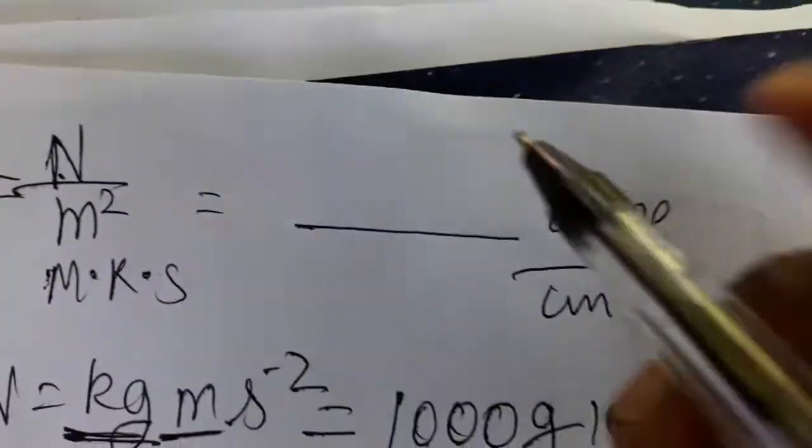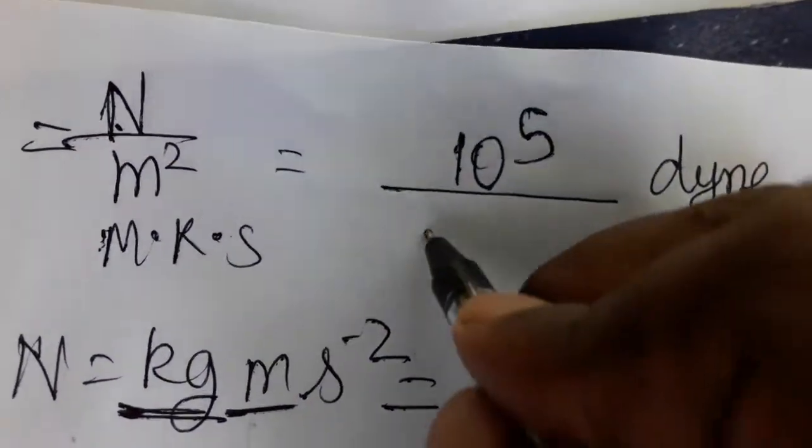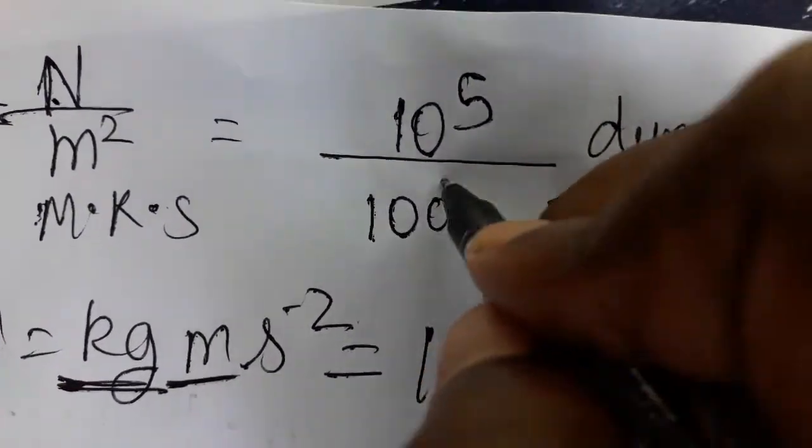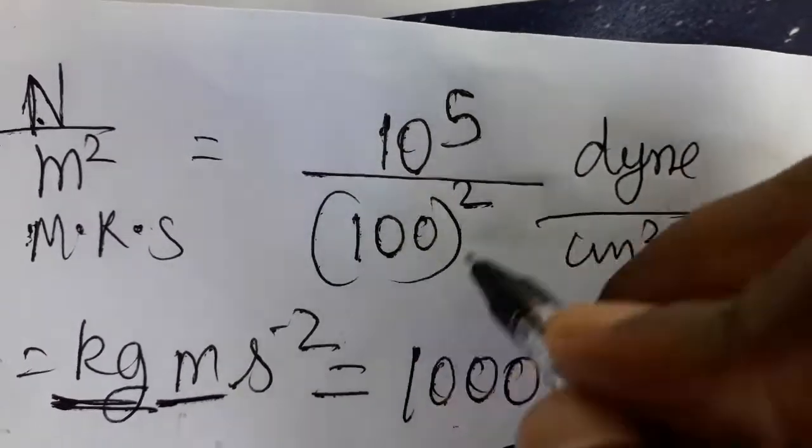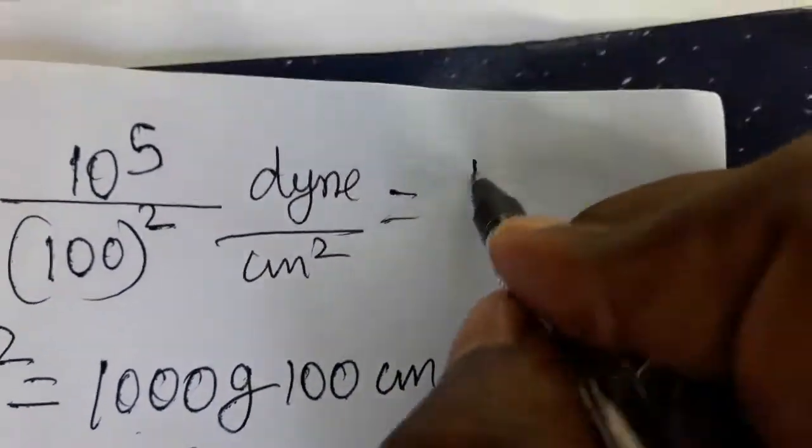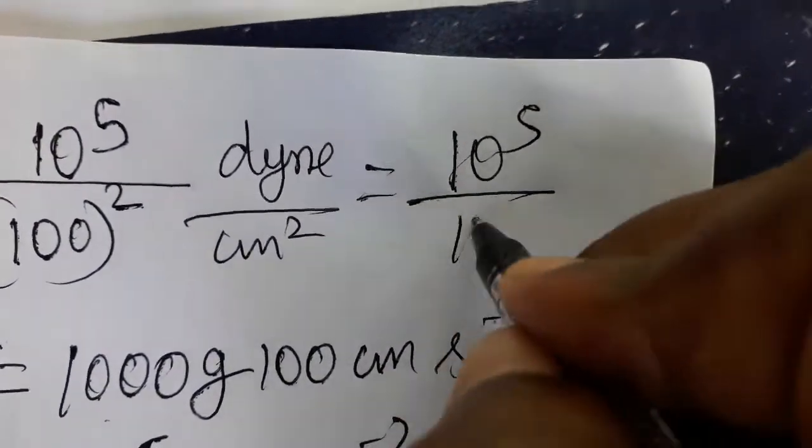So we learned one Newton is ten to the power five dyne. One meter is hundred centimeter. Here it's meter square, okay? So hundred square, so it's four times the power we'll get, okay?